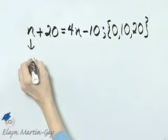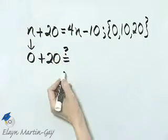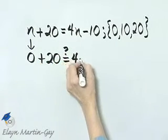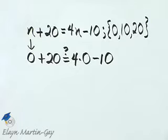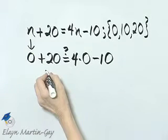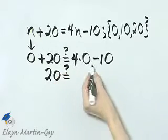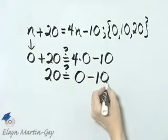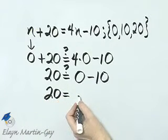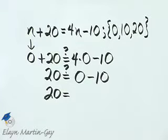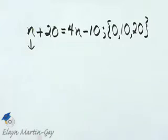Instead of n, I'll write zero plus 20. Is that equal to four times? We are replacing n with zero minus 10. Let's see, what is zero plus 20? That is 20. Is that equal to four times zero is zero minus 10? So we have 20 equal to zero minus 10. It certainly is not. So we know that zero is not a solution.